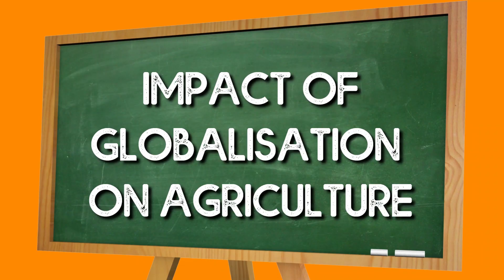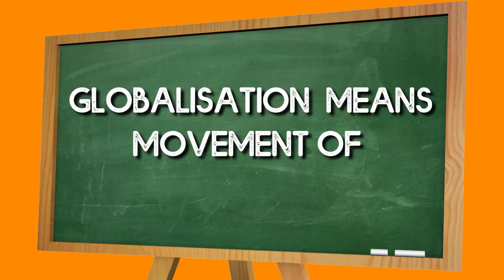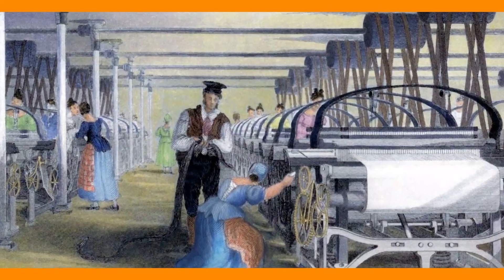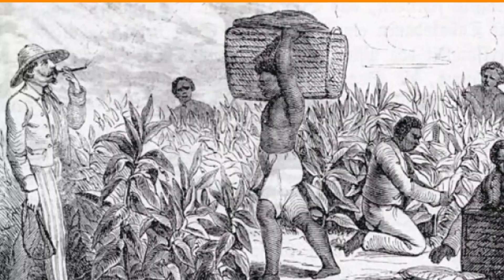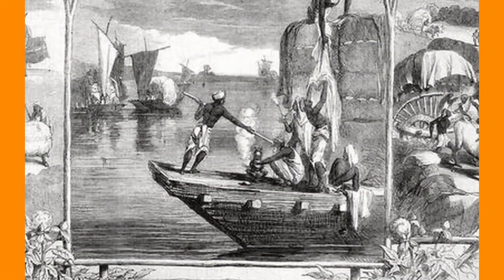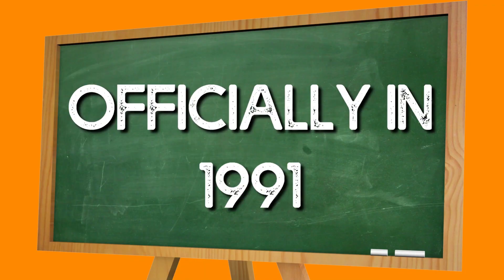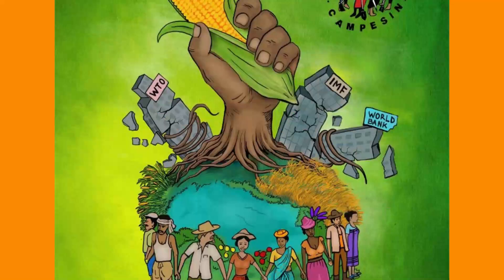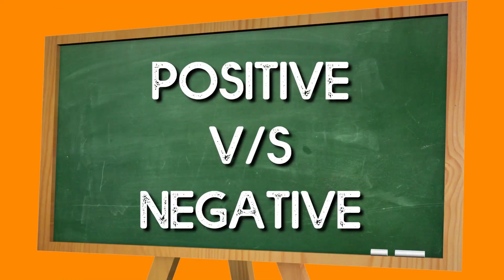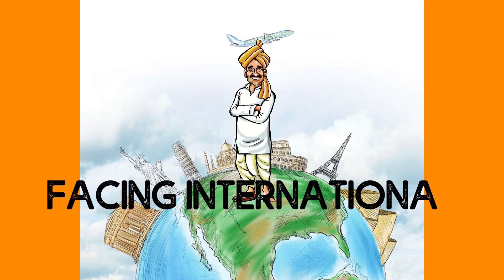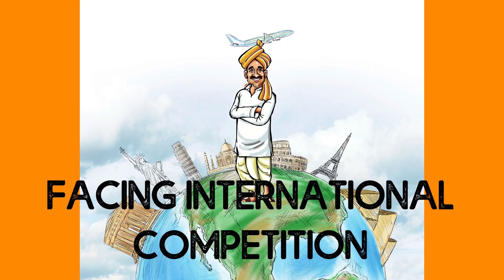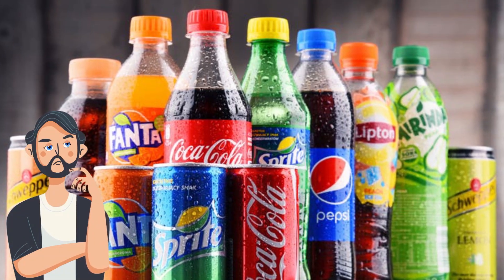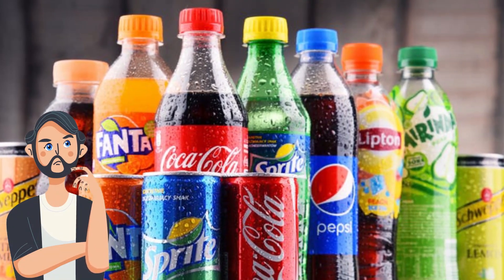Another topic is the Impact of Globalization on Agriculture. Globalization means the movement of goods, people, and capital from one place to another. We can see globalization even in the colonial period, when the British exported cotton crops from India to Manchester or Liverpool. In 1991, India reformed its economic policies and adopted liberalization and globalization. Globalization has both positive and negative impacts. The negative is that Indian crops now face tough international competition. On the positive side, foreign direct investment has increased in India, and consumers now have more product options.